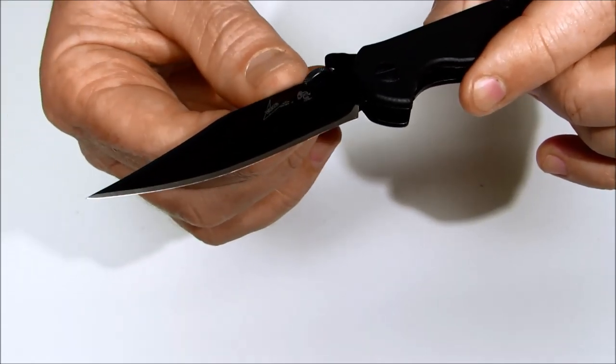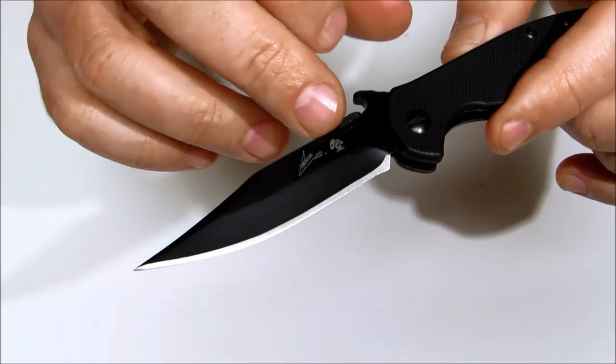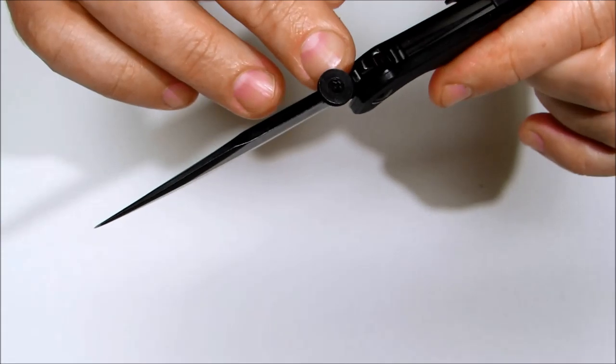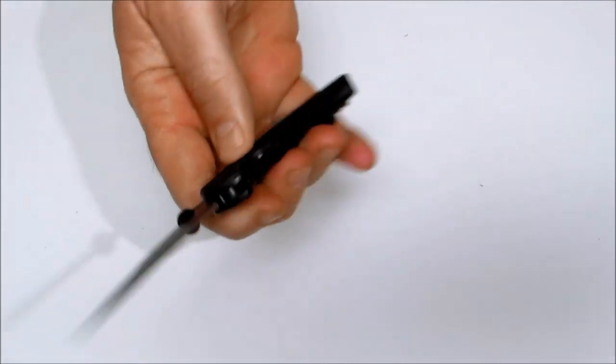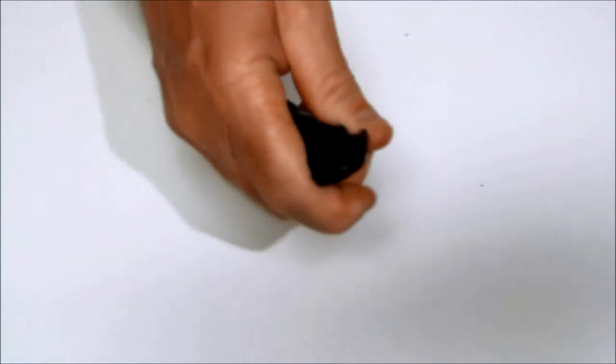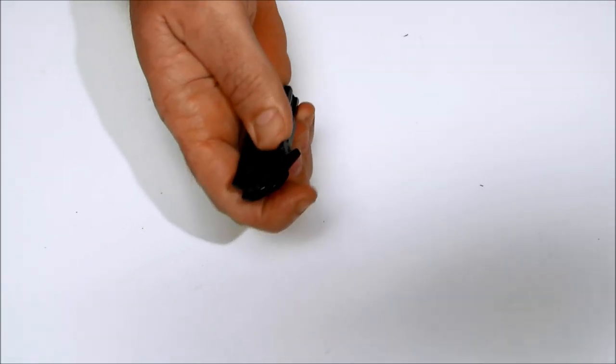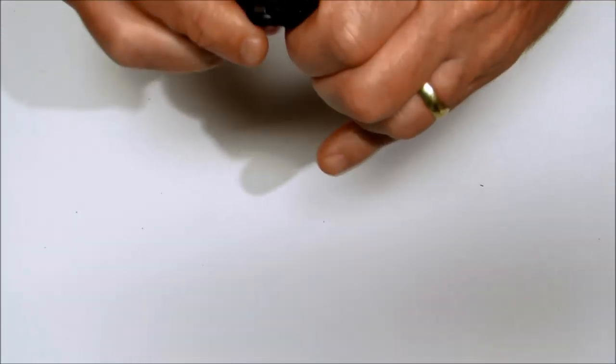The blade is coated with black oxide coating. It's got the patented Emerson thumb disc as well as the Emerson Wave feature which makes it lightning fast opening right out of the pocket. It automatically deploys for you as you open the knife.